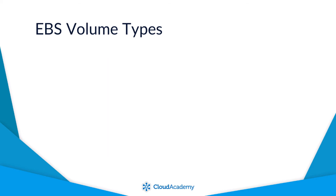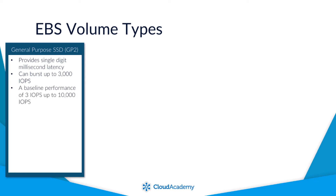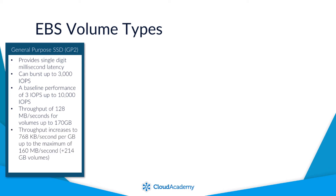The key points of the General Purpose SSD volume include: it provides single-digit millisecond latency; it can burst up to 3,000 IOPS; it has a baseline performance of 3 IOPS up to 10,000 IOPS; and a throughput of 128 megabytes per second for volumes up to 170 GB. Above this, the throughput increases by 768 kilobytes per second per gigabyte, up to a maximum of 160 megabytes per second.